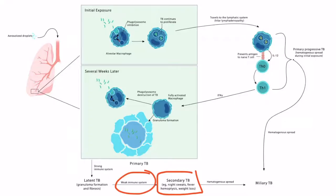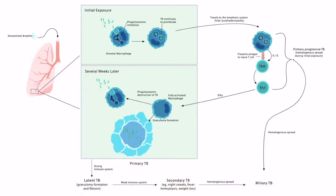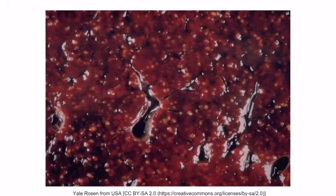It is only in secondary TB that the patient develops the classic symptoms of night sweats, fever, hemoptysis, and weight loss. Once a patient has secondary TB, they're at risk of hematogenous spread — if this occurs, the disease is referred to as miliary TB. This is the most severe form because it spreads throughout the entire body and often affects multiple organs. An image of miliary TB affecting the spleen shows small white nodules resembling millet seeds, which is why it's called miliary TB.